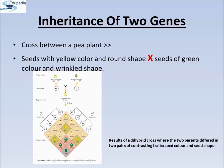Inheritance of Two Genes. Till now we were discussing about inheritance of a single gene. Mendel also worked with and crossed pea plants that differed in two characters, as seen in a cross between a pea plant that has yellow color and round shaped seeds and one that has green color and wrinkled shape seeds. Here the yellow color was dominant over the green, and round shape was dominant over the wrinkled shape. The genotypic symbols are capital Y for dominant yellow seed color, small y for recessive green seed color, capital R for round shaped seeds, and small r for wrinkled seed shape.